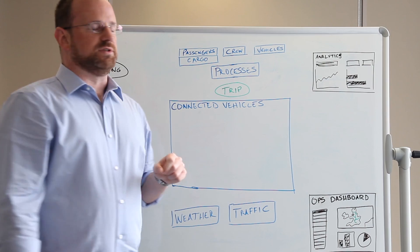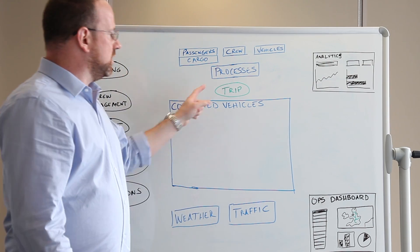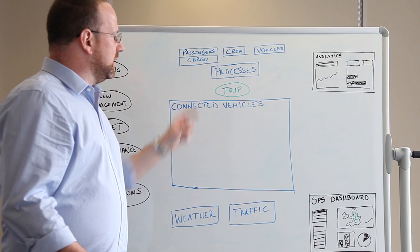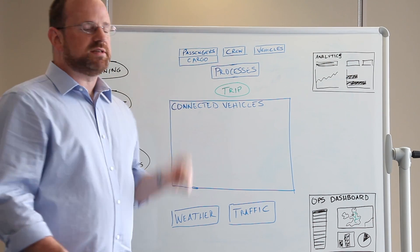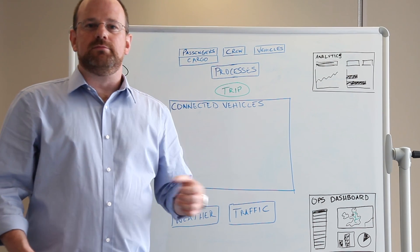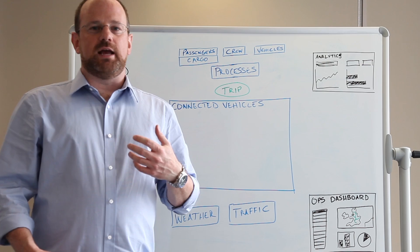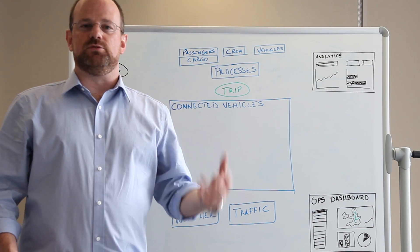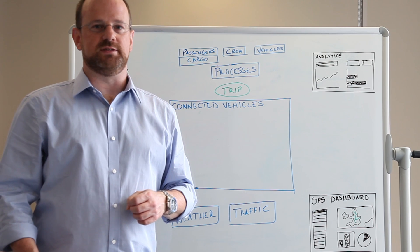All three of these key resources work together to produce what's called a trip, and a trip is a journey from A to B to C. In addition to these key resources, we have processes that help that trip happen. What we're interested in is finding out if there's a deviation in one of these resources, how is that going to impact the other resources and the journeys that those resources take over the course of a service day.